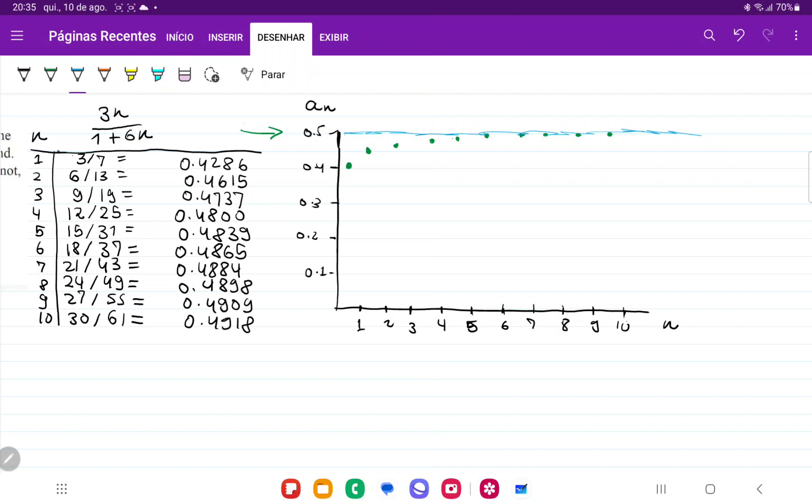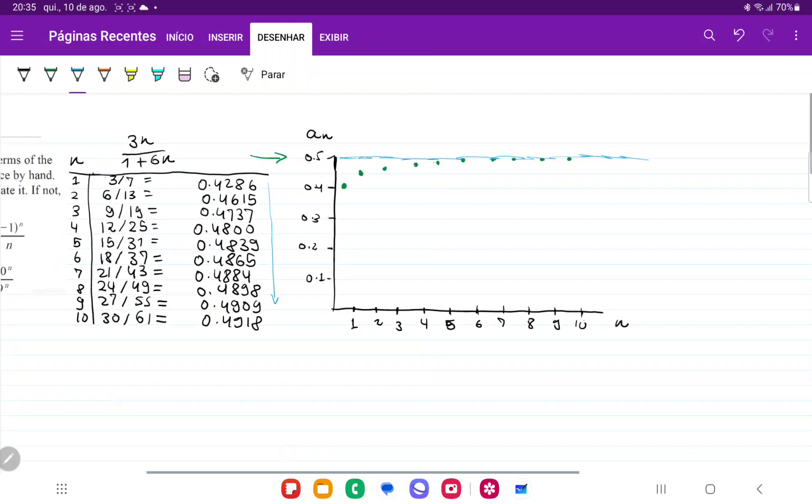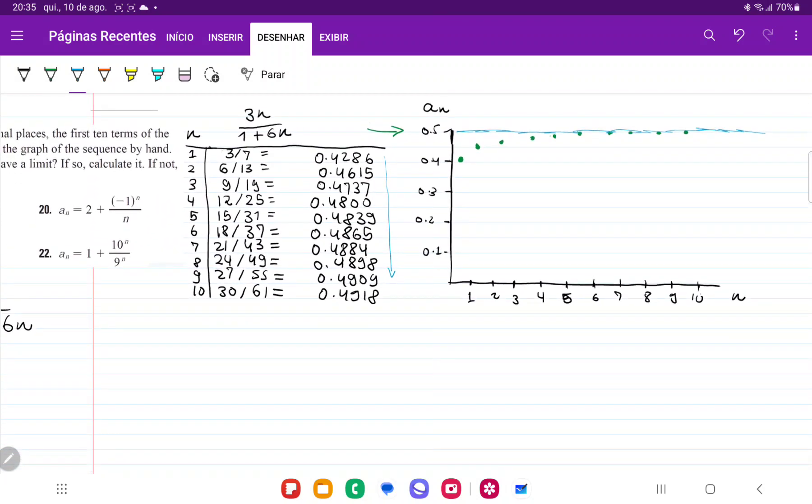The more that we add n terms. We can also see it from the table, that these values are getting closer and closer to 0.5. So that is our guess, but now we have to prove it, right?